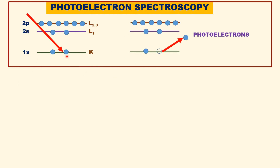Let us consider an atom with the 1s orbital, called the K shell, having two electrons. The 2s orbital is called L1 shell, and the 2p orbital with six electrons is called L2 and L3. These are all inner core electrons.